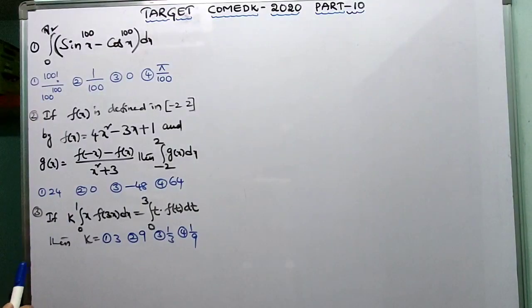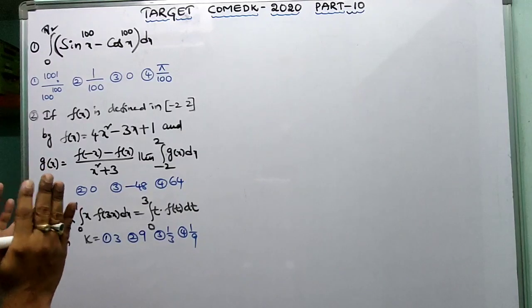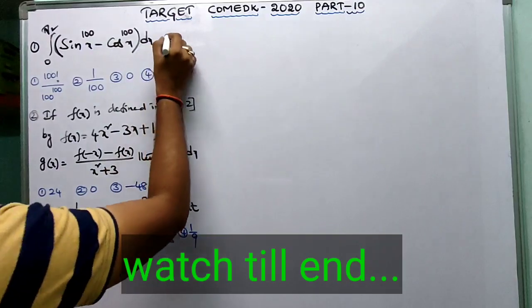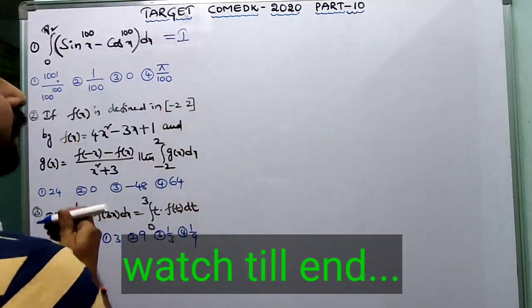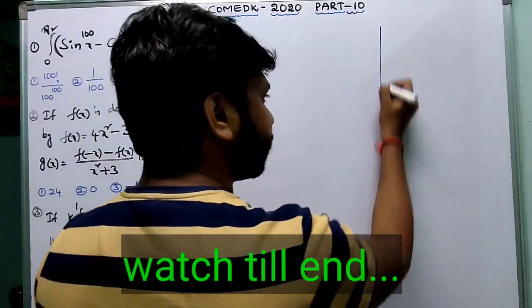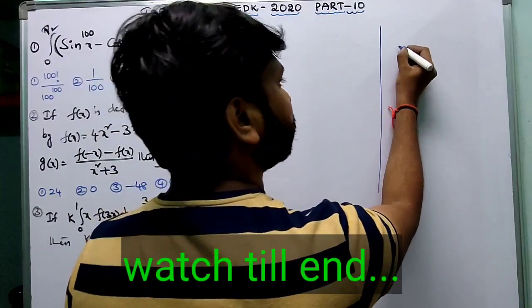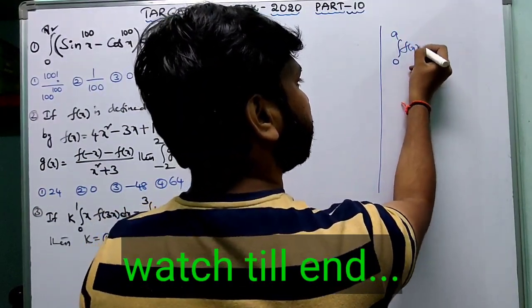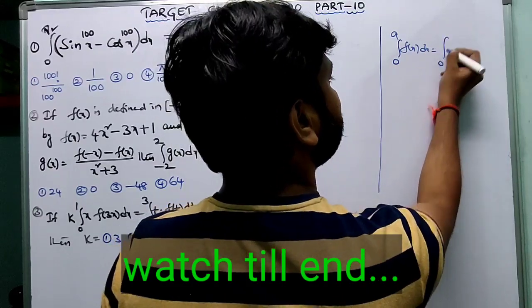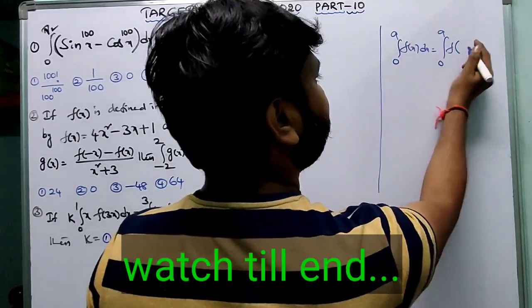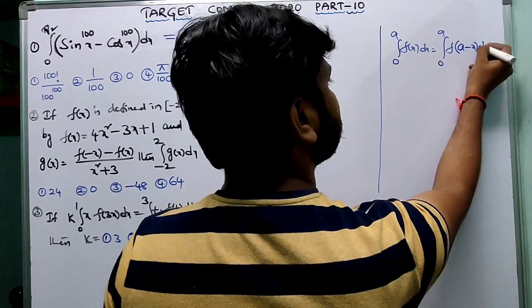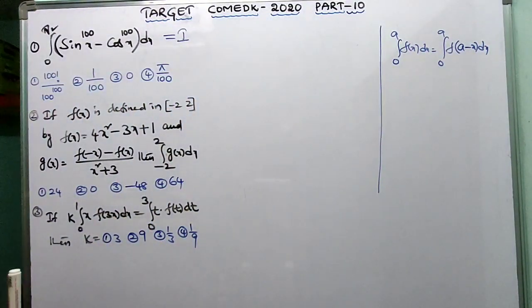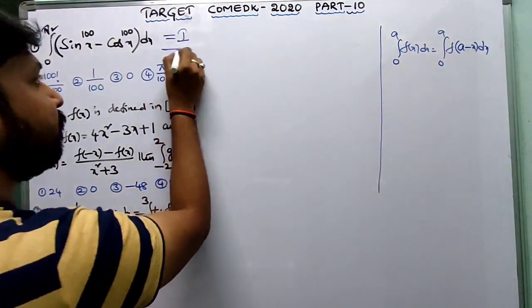The first question is: integral from 0 to π/2 of (sin¹⁰⁰x minus cos¹⁰⁰x) dx — what does this equal? Let this be called I. According to the property: integral from 0 to a of f(x) dx equals integral from 0 to a of f(a minus x) dx.